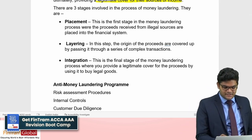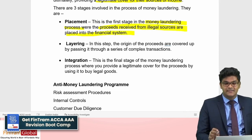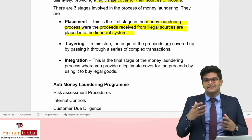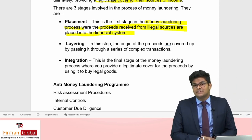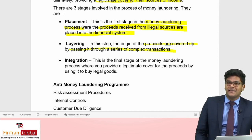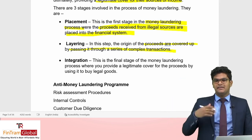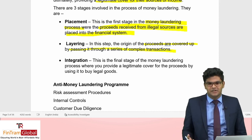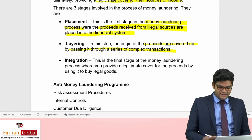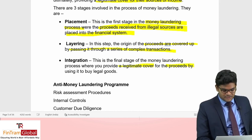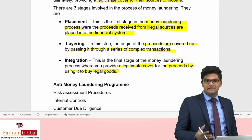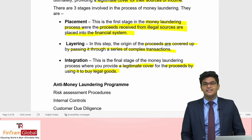Placement is the first stage, where proceeds from illegal sources are placed into the financial system. Layering is when the origin of the proceeds is covered up by passing it through a series of complex transactions — such as moving it to a foreign account or investing in a business with no clear purpose. Integration is the final stage, where a legitimate cover is provided for the proceeds by using them to buy legal goods.